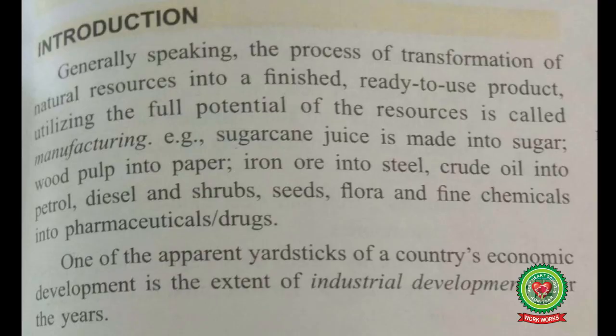Generally speaking, the process of transforming — meaning changing — natural resources, that is raw materials, into finished, ready-to-use products, utilizing the full potential of the resources, is called manufacturing. Examples include: sugar cane juice made into sugar, wood pulp into paper, iron ore into steel, crude oil into petrol and diesel, and shrubs, seeds, flora, and fine chemicals into pharmaceuticals and drugs.